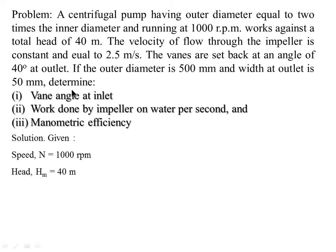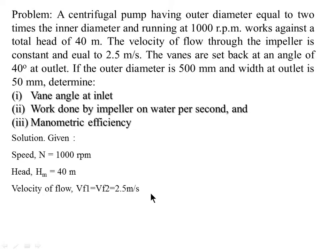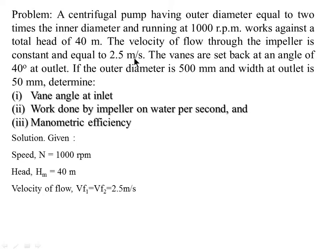The velocity of flow through the impeller is constant, meaning VF1 equals VF2. VF1 and VF2 are the velocity of flow at inlet and outlet respectively, both equal to 2.5 meter per second. The vanes are set back at an angle of 40 degree at the outlet.